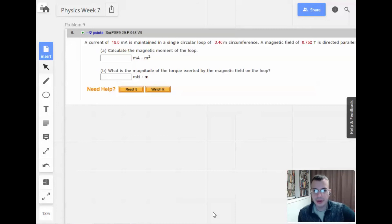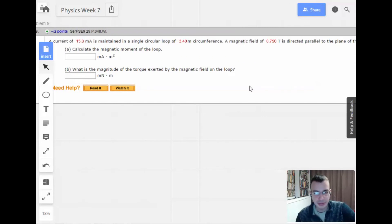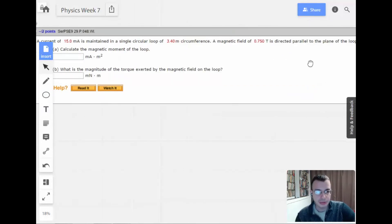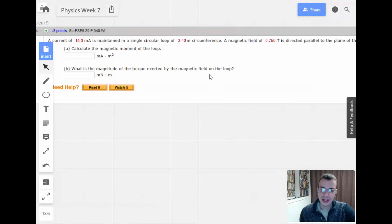Week 7, problem 9. A current of 15 milliamps is maintained in a circular loop of 3.4 meters. Man, that's a small current for a big loop. The magnetic force of 0.75 teslas is directed parallel to the plane of the loop. Okay, calculate the magnetic moment of the loop.